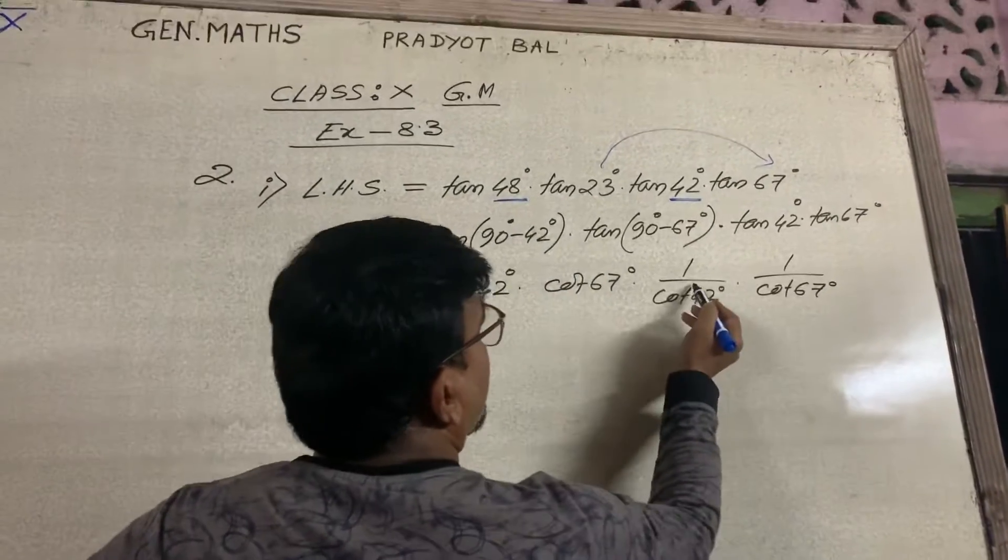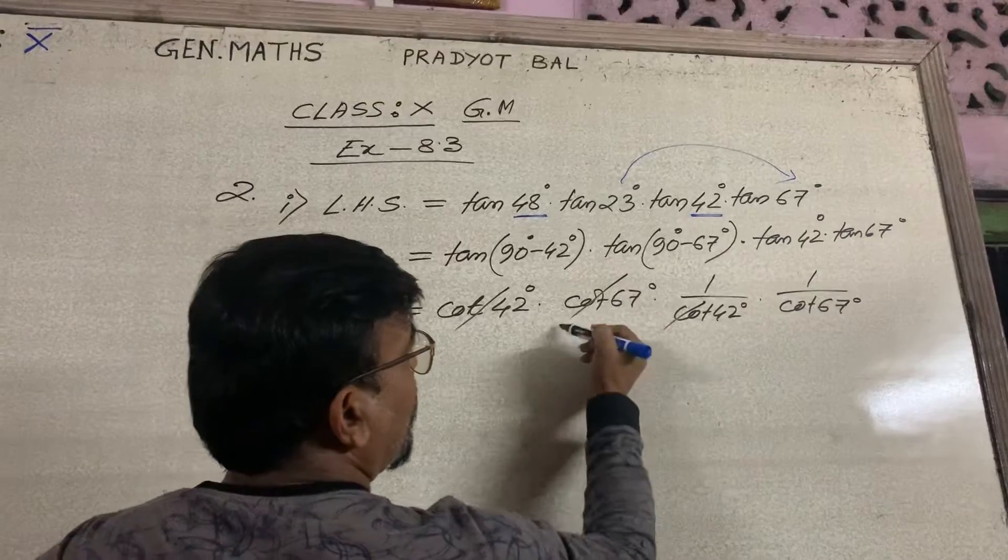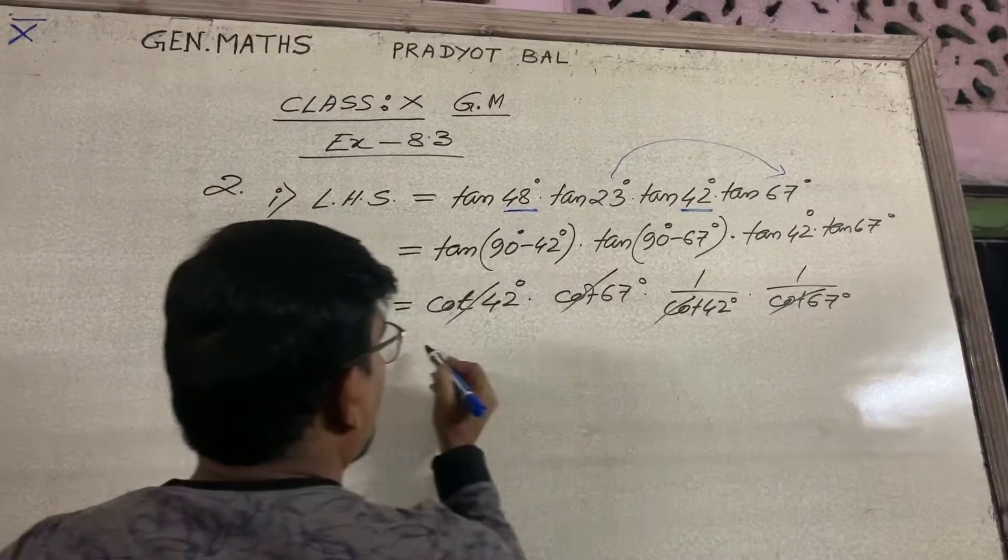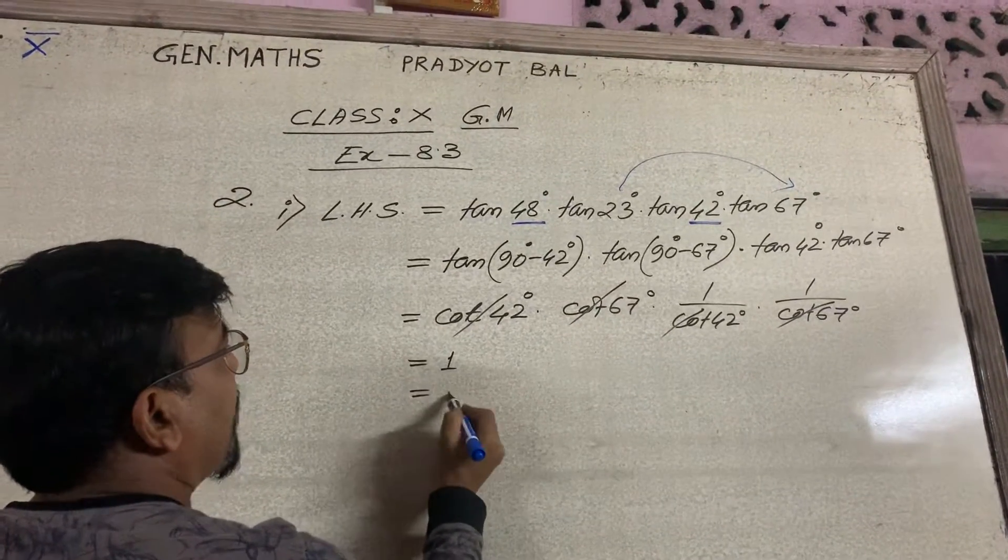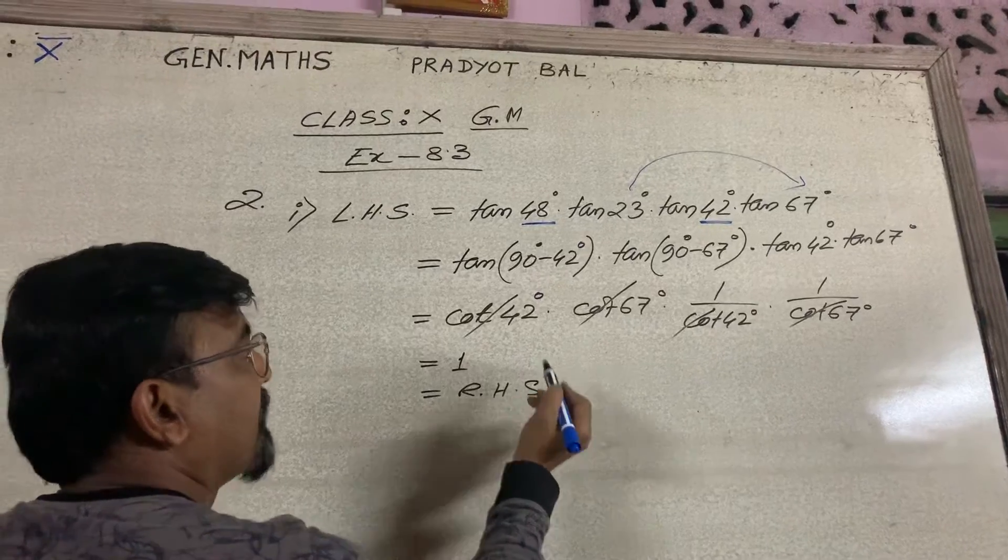Now, just simple: cot 42 degree cancel out, cot 67 cancel out, is equal to 1 and that's our right hand side.